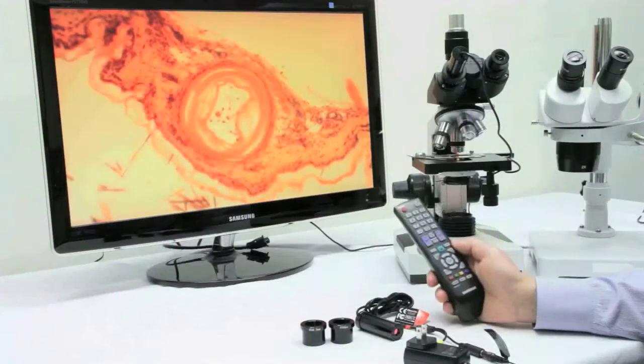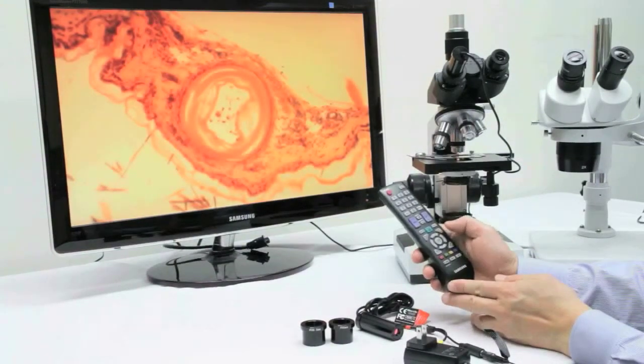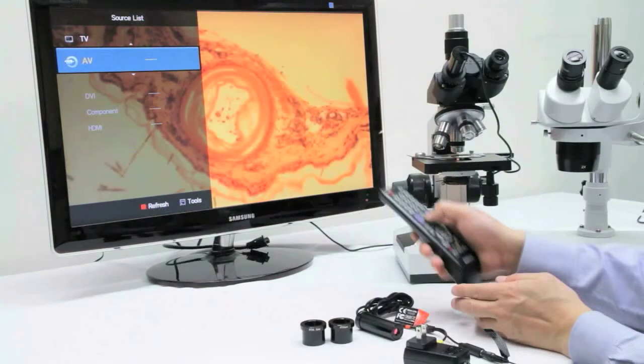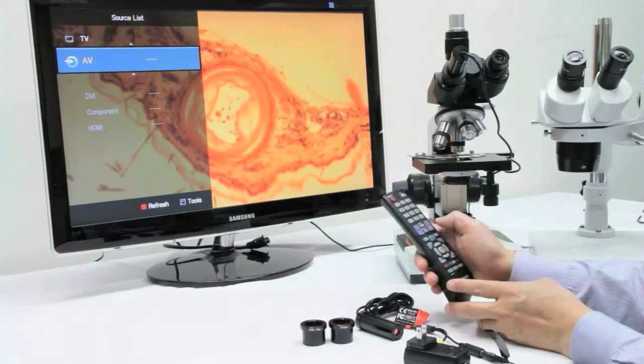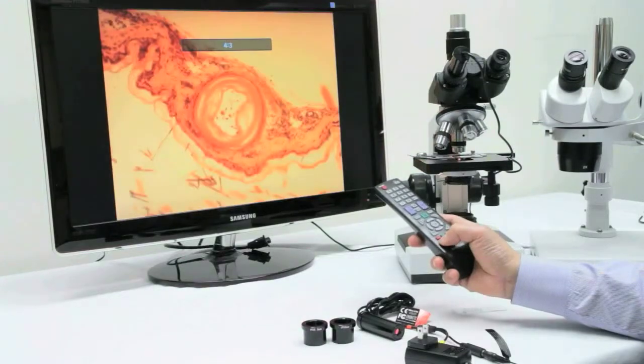After connecting, we make sure we are on the correct input. Generally, this should be under AV mode. Depending on your television, it could also be component mode. You can also select a ratio depending on your preference and your TV's options.